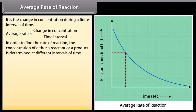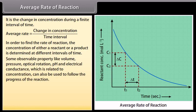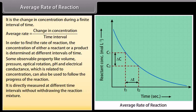In order to find the rate of reaction, the concentration of either a reactant or a product is determined at different intervals of time. Some observable properties like volume, pressure, optical rotation, pH, and electrical conductance, which are related to concentration, can also be used to follow the progress of the reaction. It is directly measured at different time intervals without withdrawing the reaction mixture. Average rate is equal to negative ΔC upon ΔT.